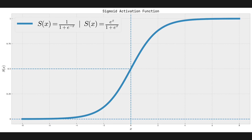Sigmoid is very useful for mapping values to probabilities. We give sigmoid a real number and it maps it to a zero-one interval. We saw that in logistic regression, where we gave the output of a linear function to sigmoid and it mapped it to a probability. There's also an extension of sigmoid called softmax used for multi-class classification, but sigmoid in general is used for binary classification.